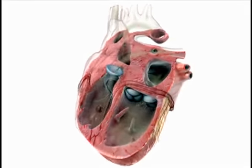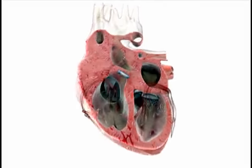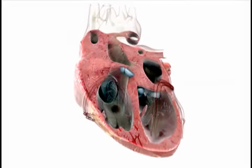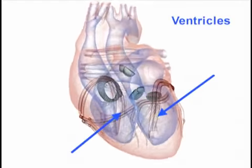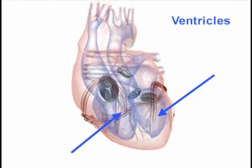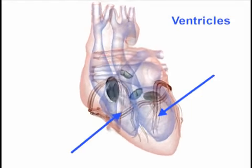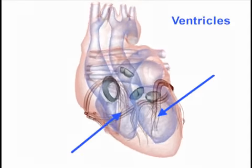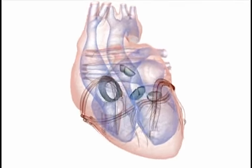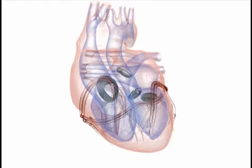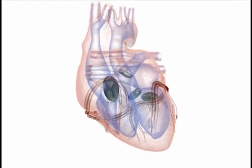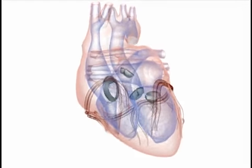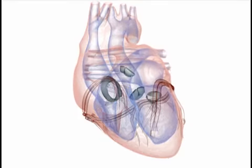Congestive heart failure, on the other hand, occurs when the heart is pumping inefficiently and can no longer meet the body's need for blood. The ventricles, which are the main pumps within the heart, often are to blame for the insufficient blood flow. The congestive part of congestive heart failure comes from the backup of blood in the veins leading into the heart. This backup causes the kidney to retain fluids.